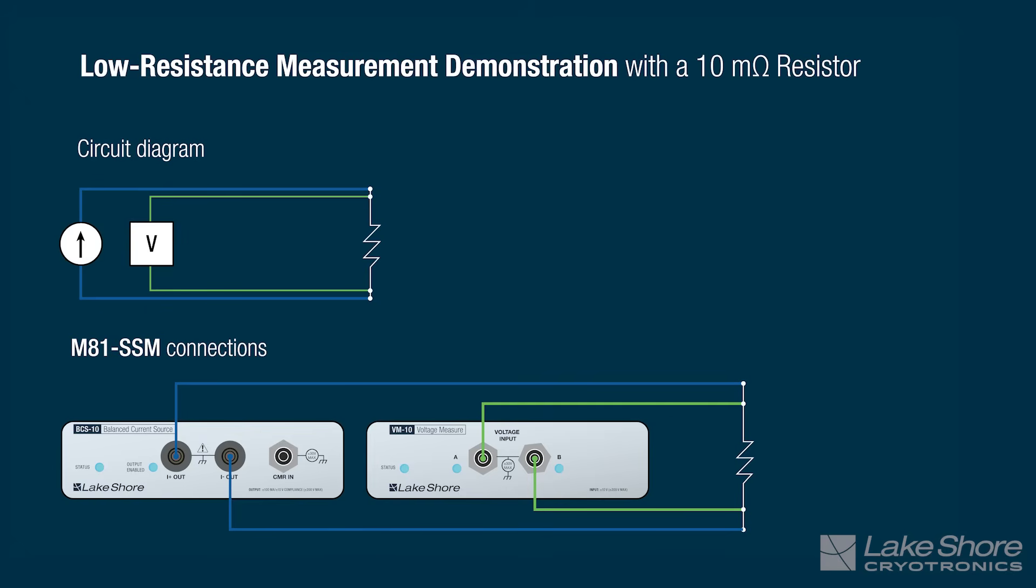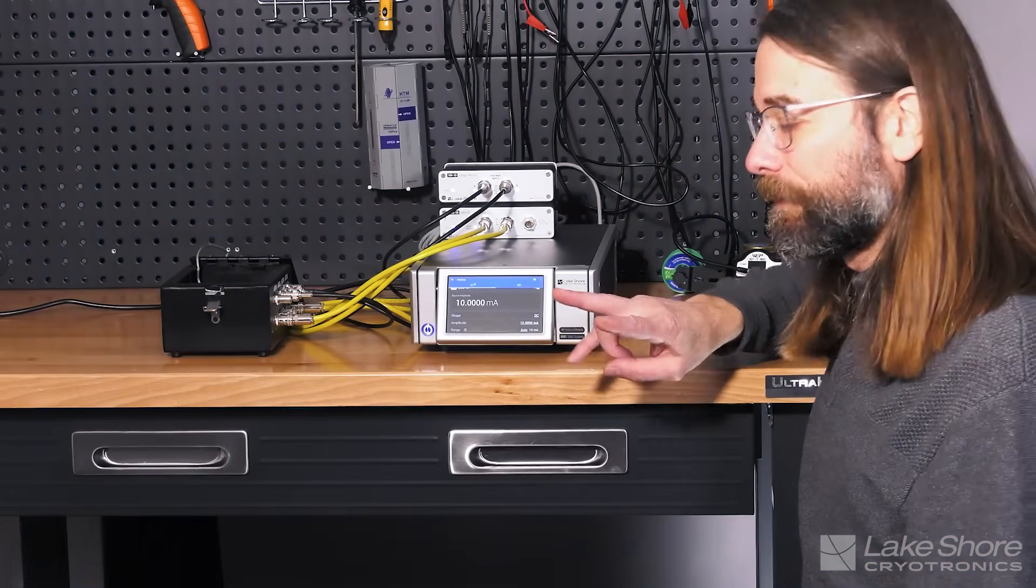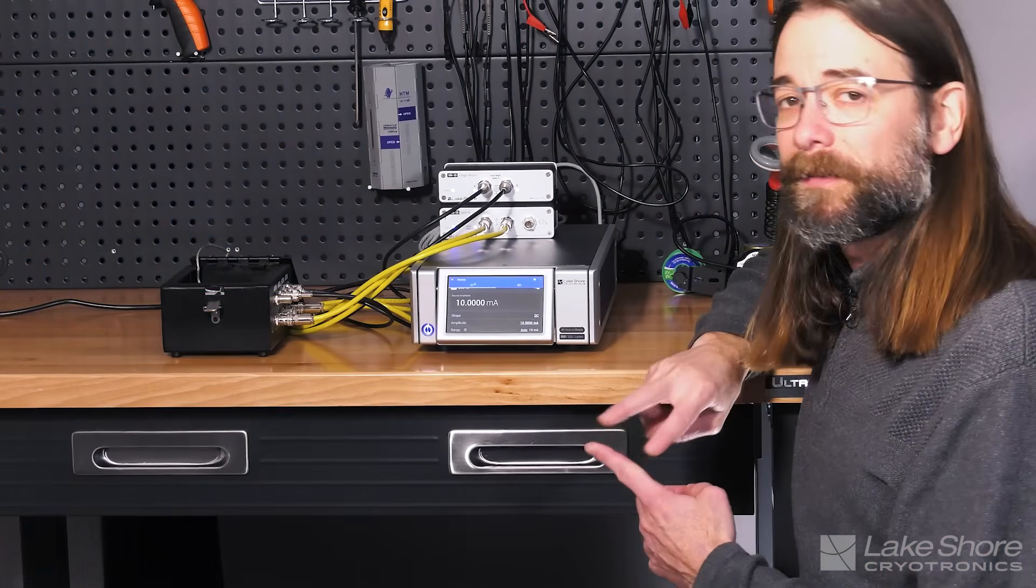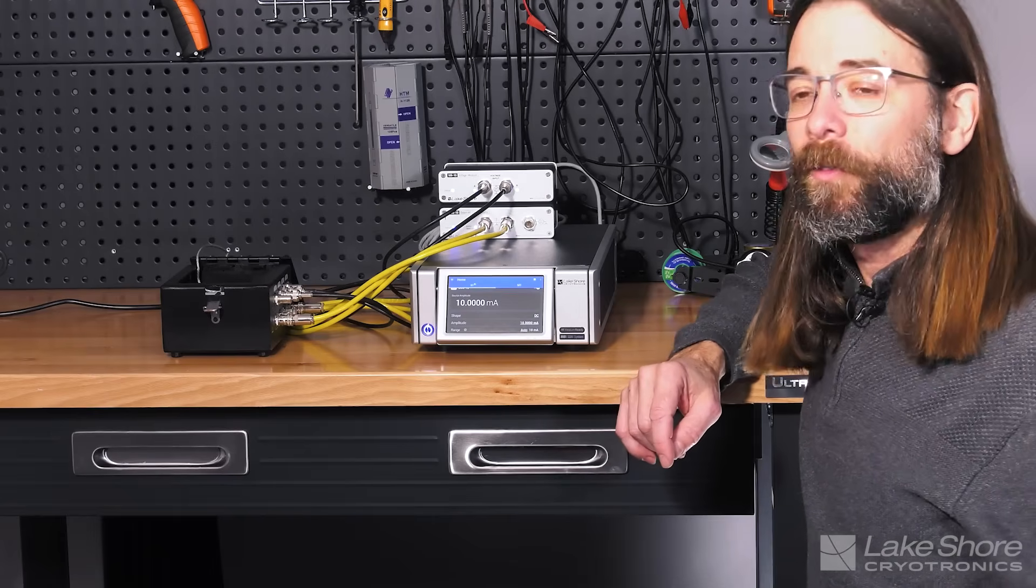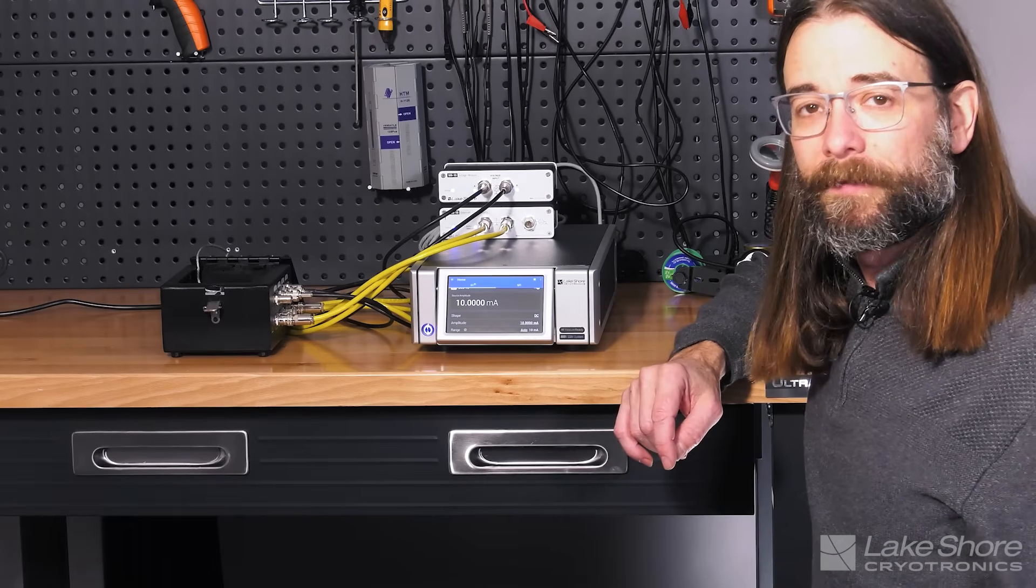We're going to be making a four-wire measurement. In a four-wire measurement, we're typically sourcing current and then measuring voltage as closely as we can to the device under test. And we're primarily doing that in order to minimize the resistance of the loss due to the resistance of the leads.